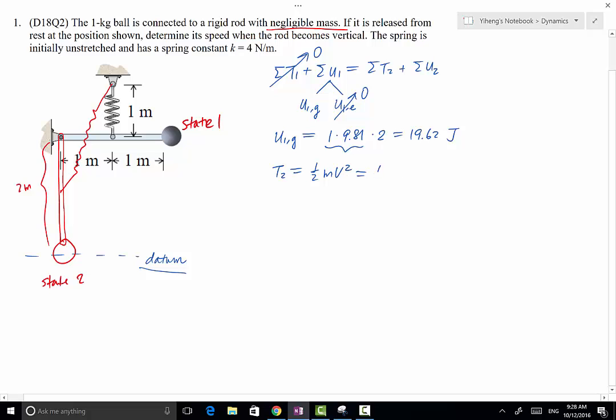And this is 1 half times 1 times v squared. And this v is what we're trying to solve for. And then U2 also has two components, U2g and U2e.